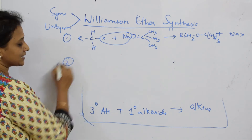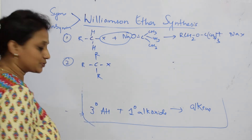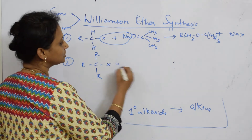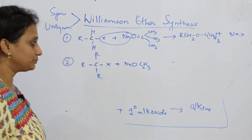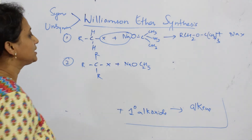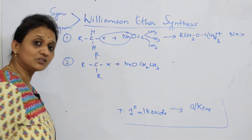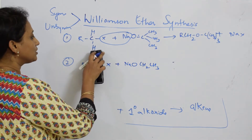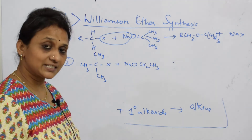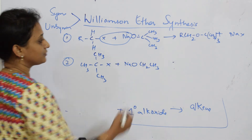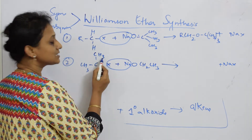Now the second case — tertiary alkyl halide means a carbon with X where all three substituents are alkyl groups. Adding primary alkoxide: O–Na with, say, C₂H₅ — primary because the carbon is attached to two hydrogens. As stated, with a tertiary alkyl halide, elimination is more preferred over substitution. NaX is eliminated.